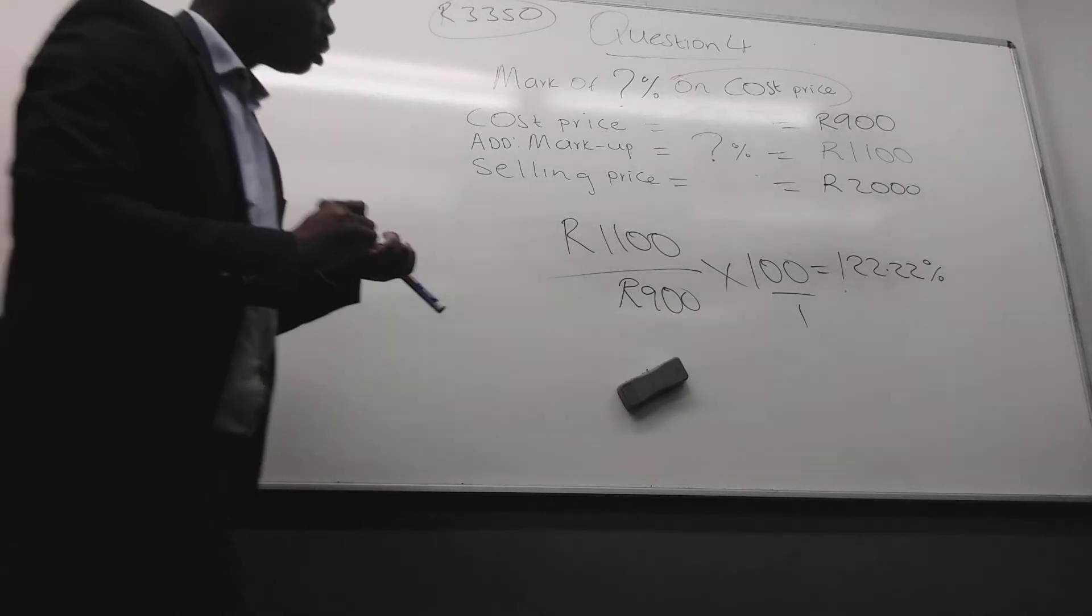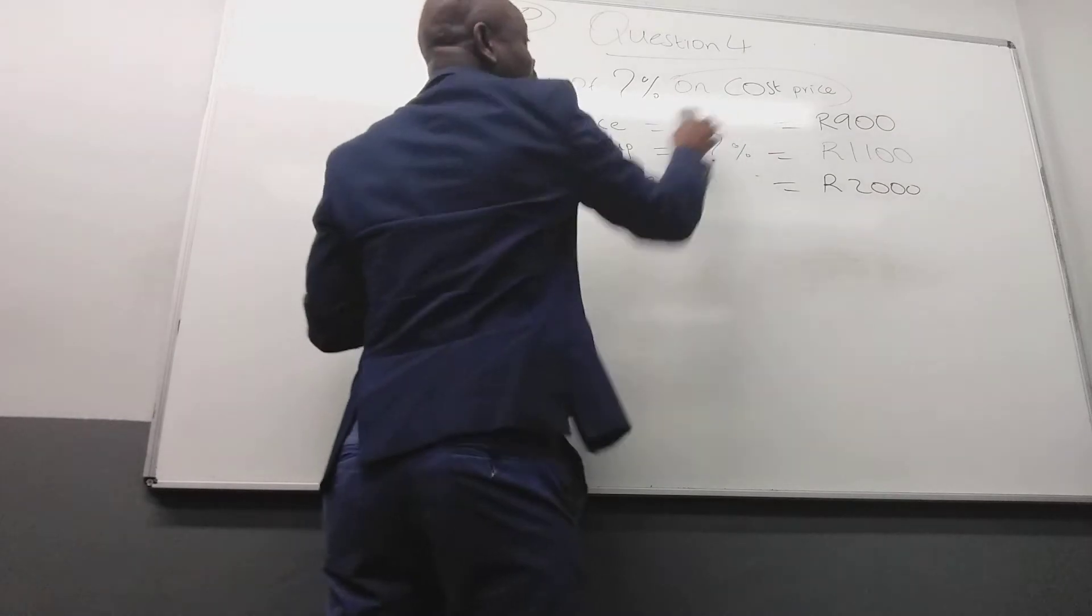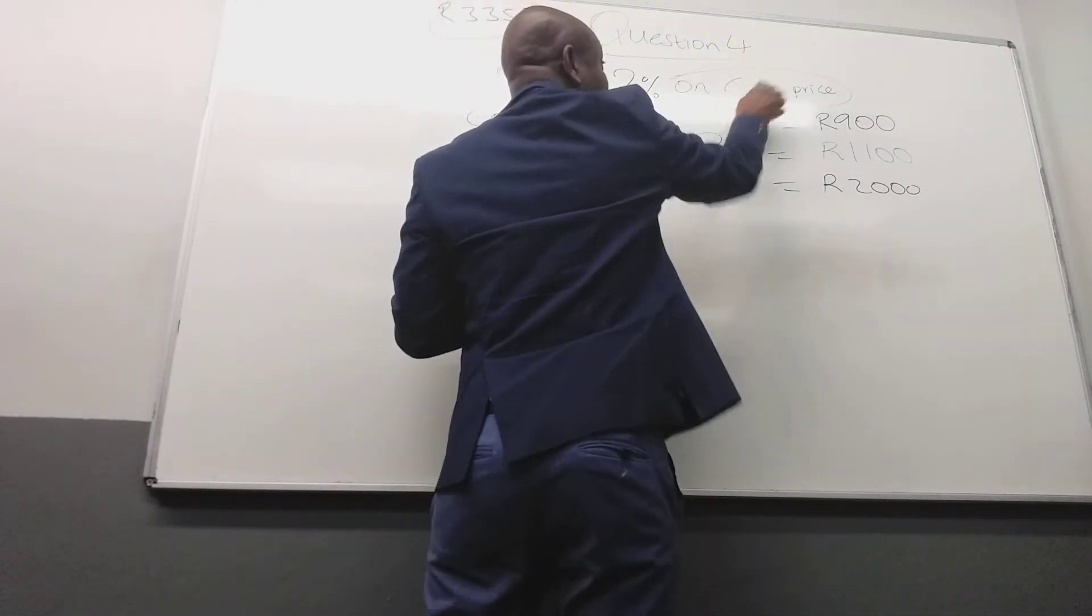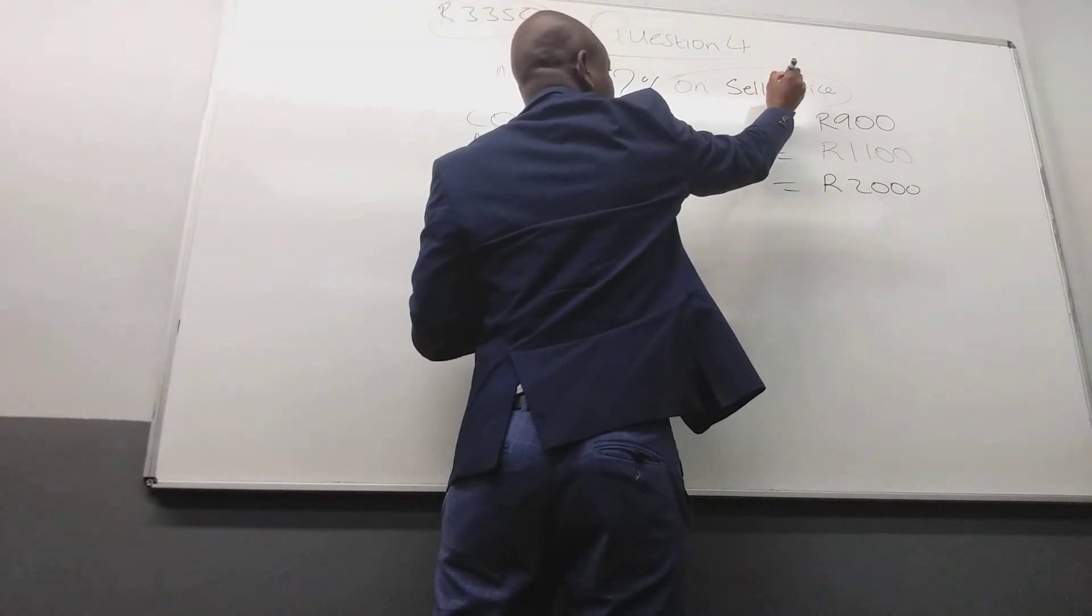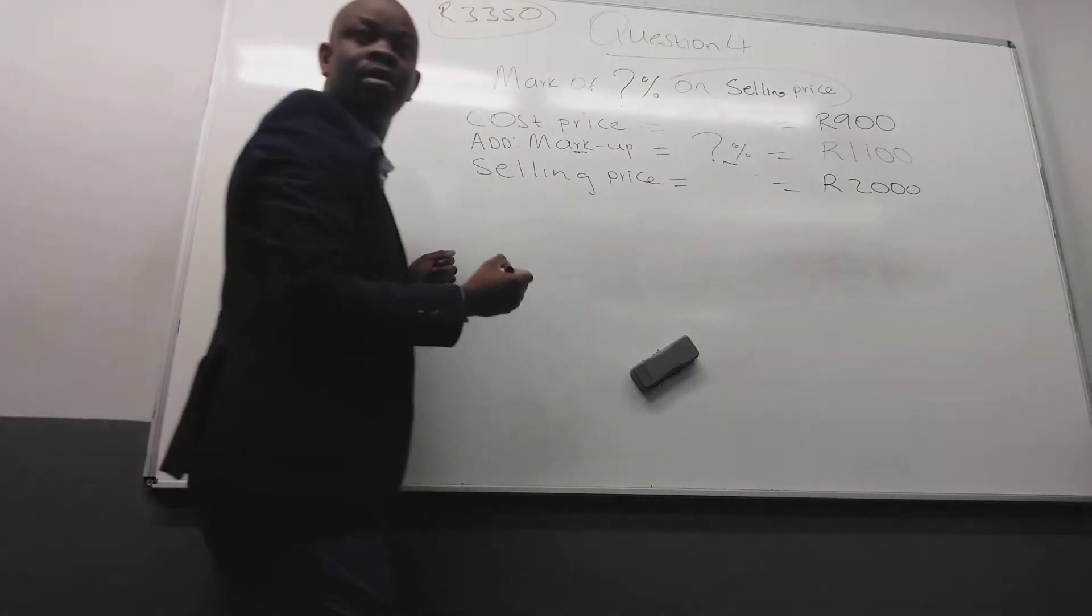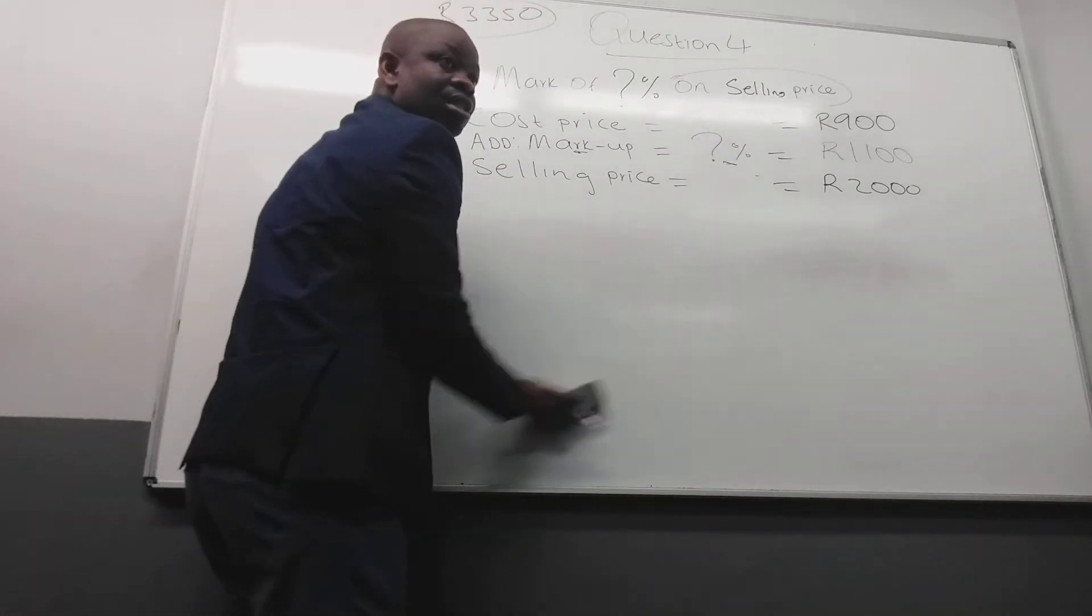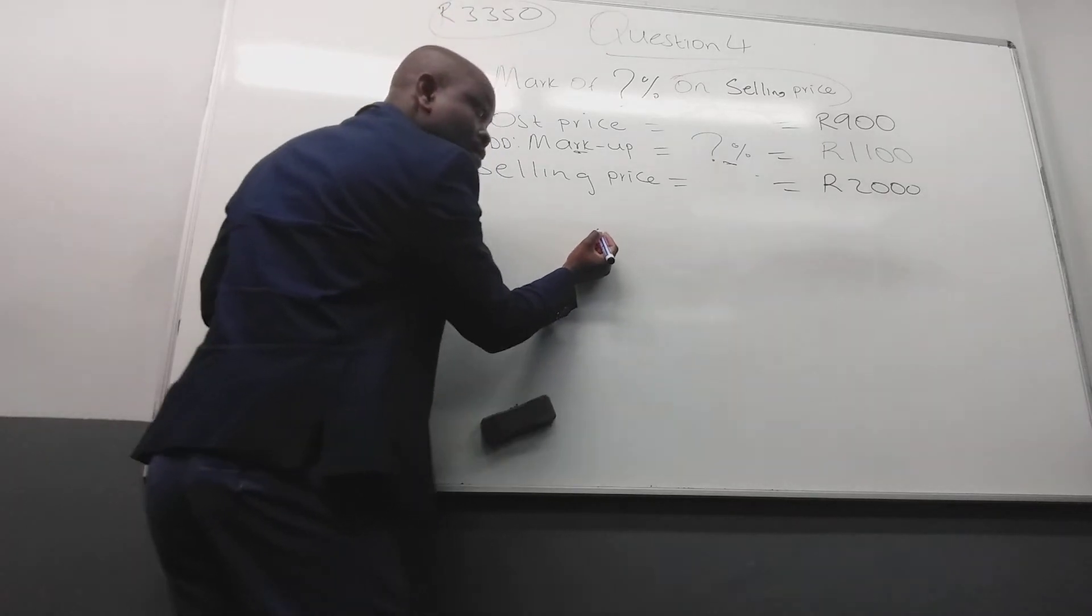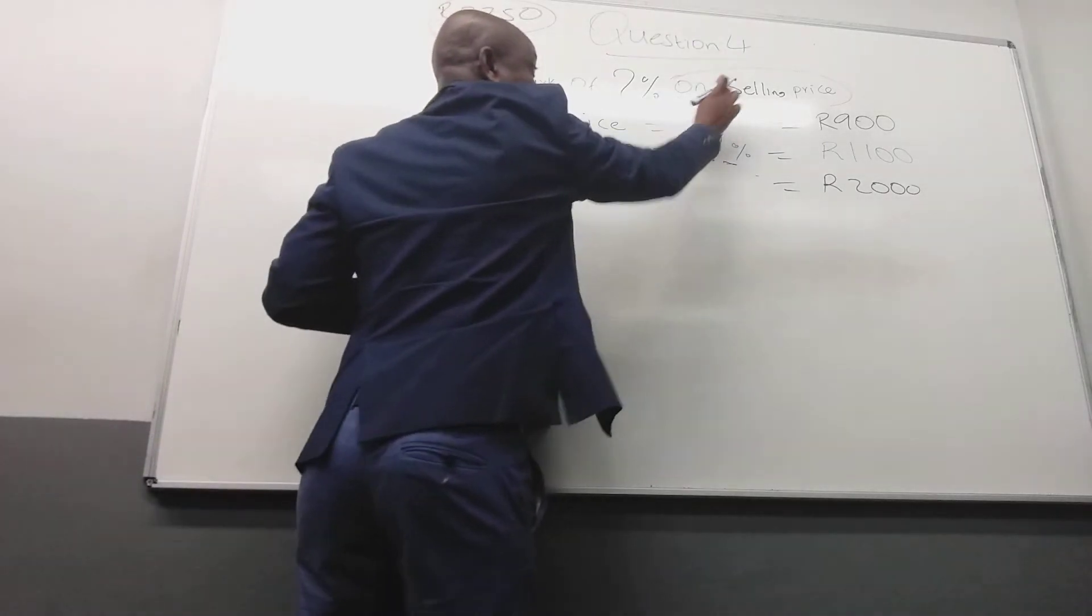Can I change it? So now let's change it and say now still they want that but here they say the markup is on what? Selling price. But they want you to find what, this markup in the form of percentage. So use the same technique. How will I calculate the markup is on selling price now? I want to find this and the markup is on selling price.